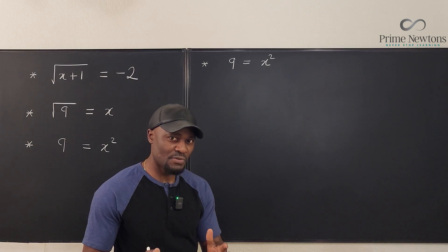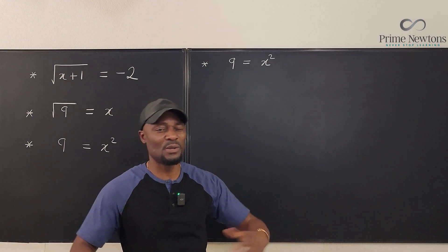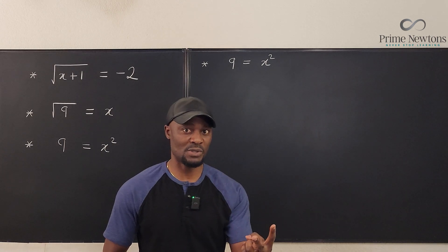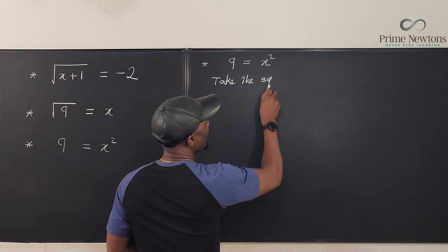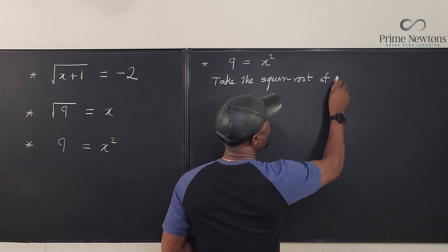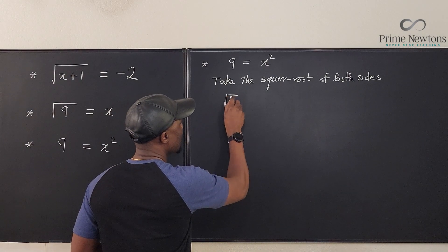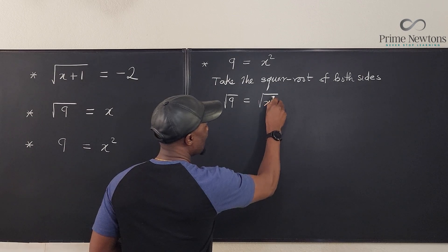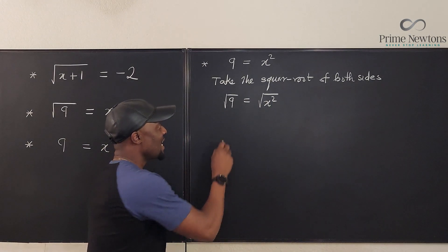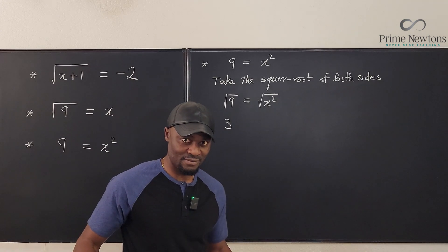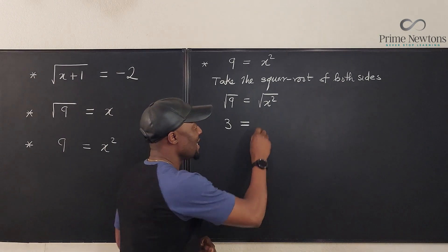By the fundamental theorem of algebra, the polynomial equation x² = 9 must have two solutions. The correct next step is to take the square root of both sides. The square root of nine is three — not plus or minus three. And critically, the square root of x² is NOT x — it is the absolute value of x. This is the genesis of all the confusion I've seen in the comments.